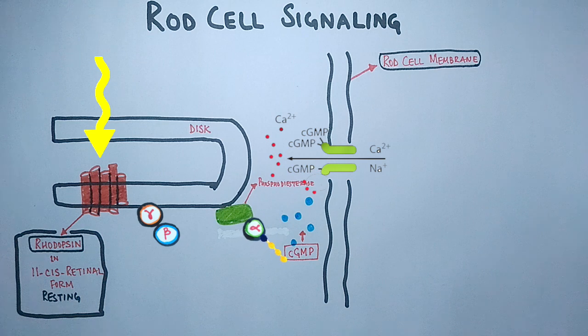And this GTP-bound alpha subunit activates the phosphodiesterase by binding to it, as shown in the diagram.